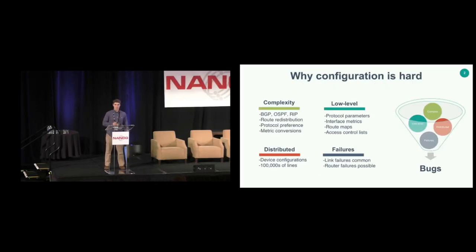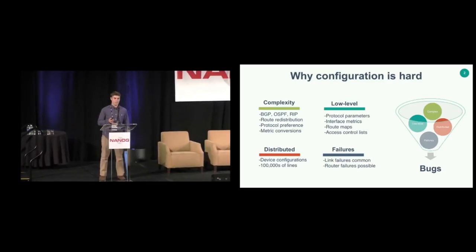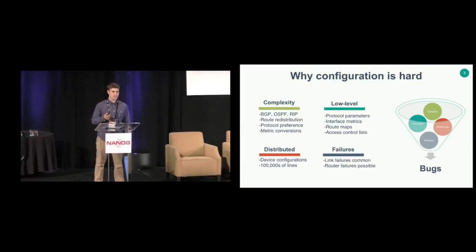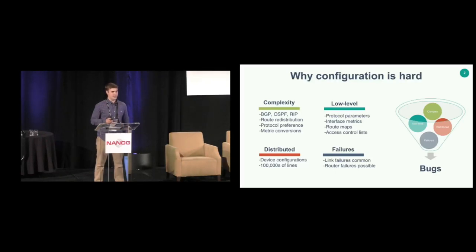This work was motivated by the observation that network configuration is still very hard. Networks are inherently very complex — a typical network runs multiple protocols like BGP or OSPF, and these protocols can interact in subtle ways with mechanisms like route redistribution. The configuration languages provided by vendors are typically very low level, requiring protocol-level parameters, interface-level metrics, and filters like route maps and access control lists. And even if you configure one device correctly, the network is made up of many devices, so you have to configure every device such that the emergent behavior does the correct thing.